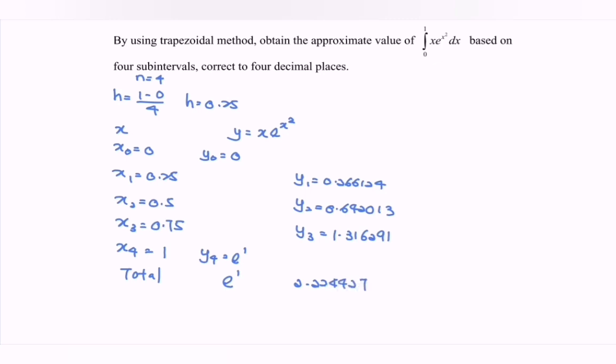Next, substitute into the formula, where we have h over 2 bracket. We have y₀ plus y₄, plus 2 multiplied with y₁ plus y₂ plus y₃.